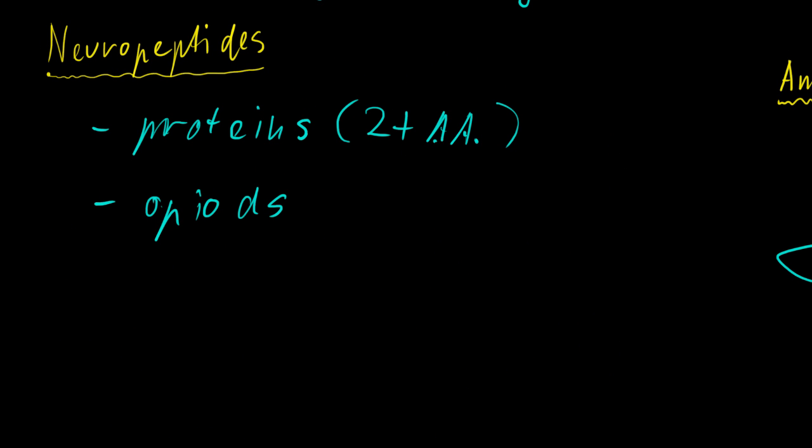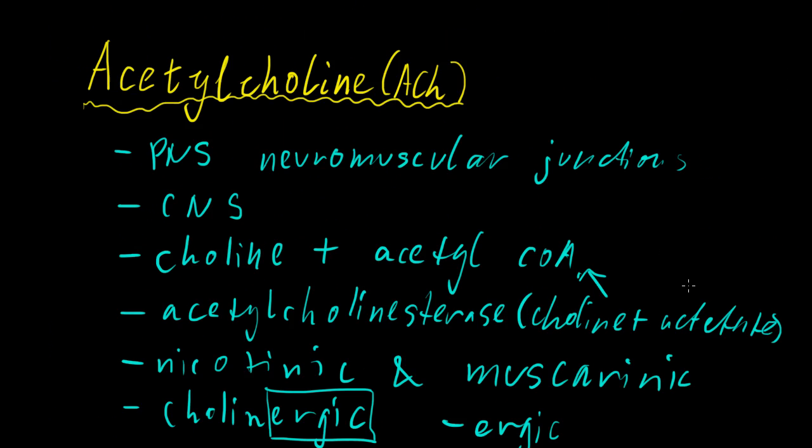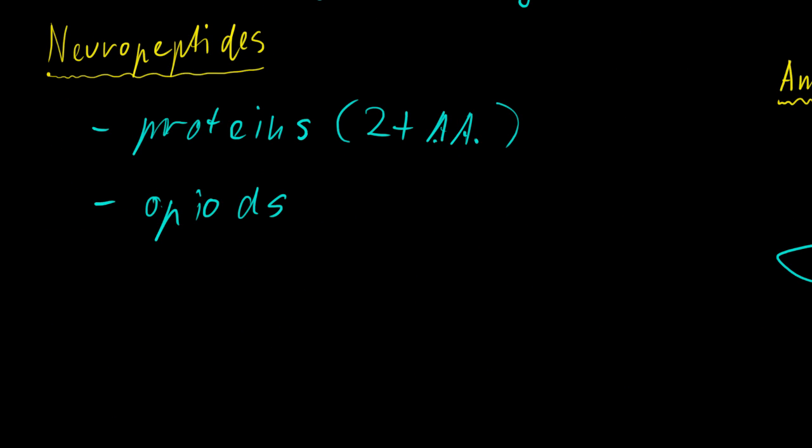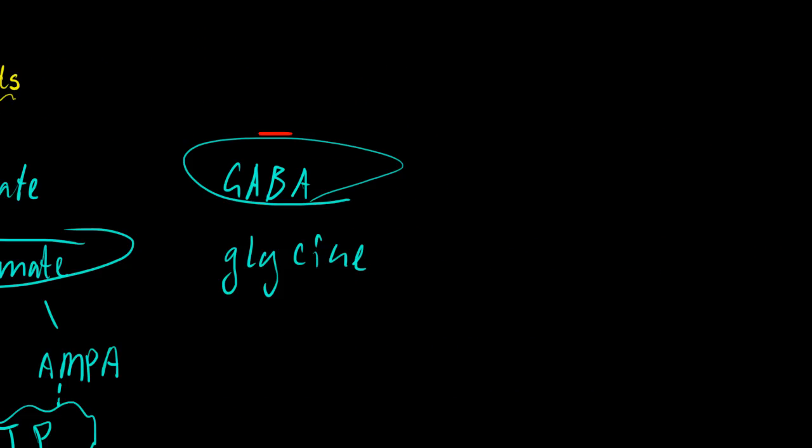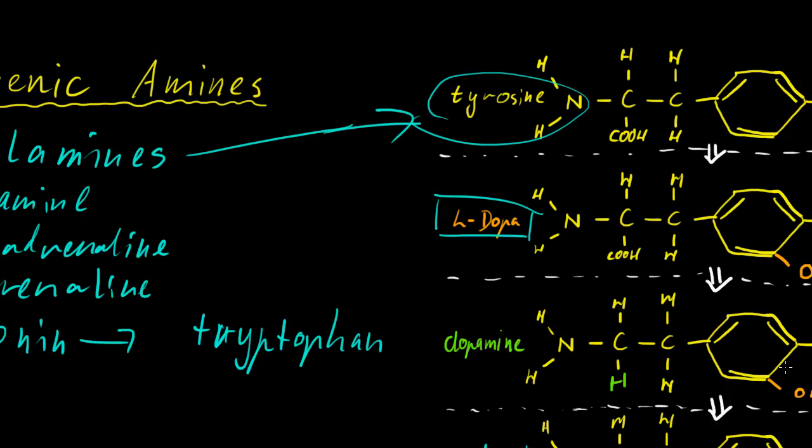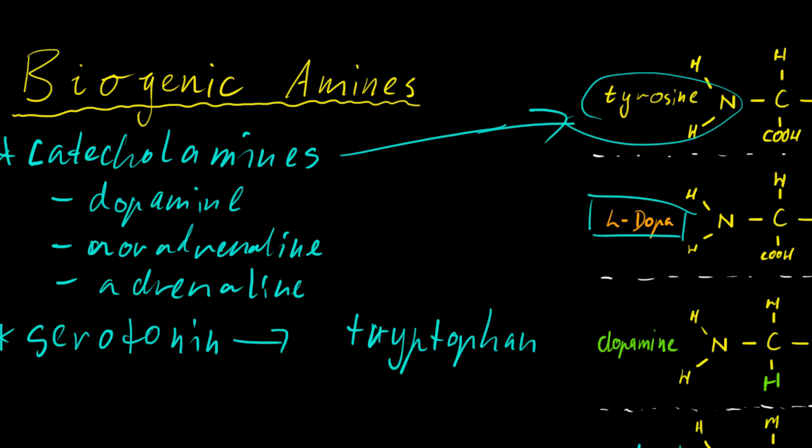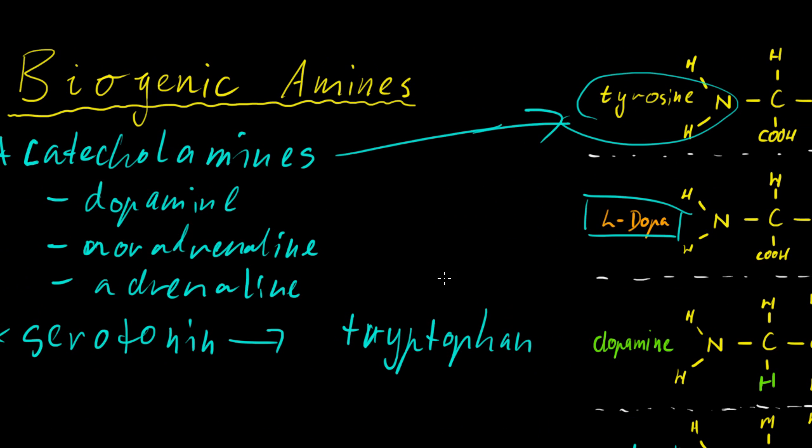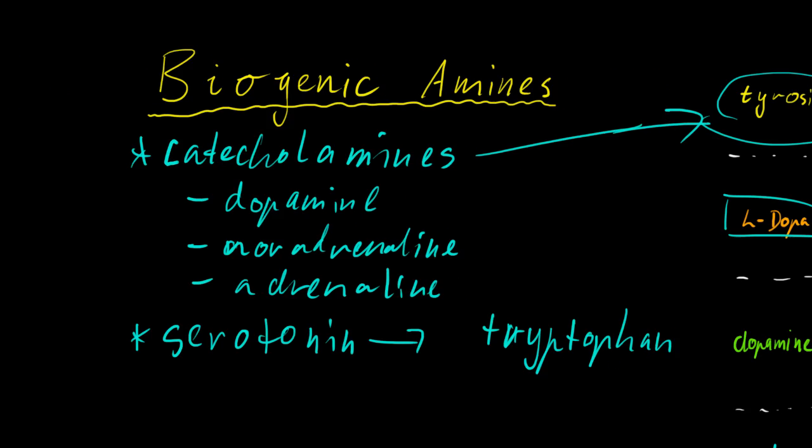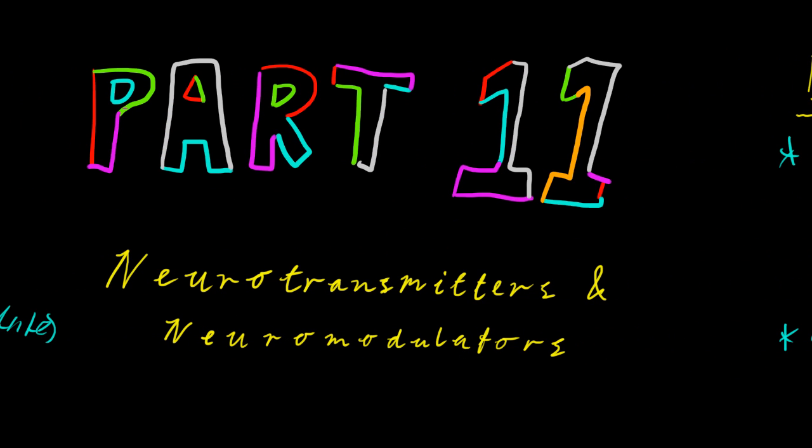And there are so many others, but we can't go through all of them. But there are some very interesting ones. Gases, as an example, ATP. And of course, we have the neuropeptides. We have acetylcholine, the amino acids we've talked about. And of course, the biogenic amines, which are being produced from types of amino acids. But anyway, this has been part 11, neurotransmitters and neuromodulators. I hope it's been helpful. Thanks.